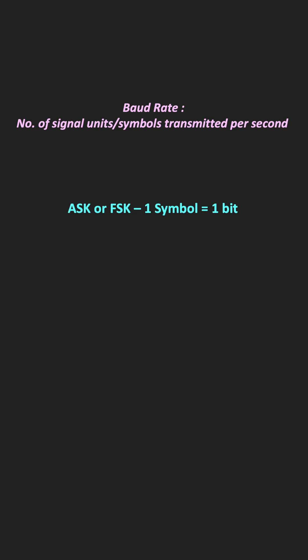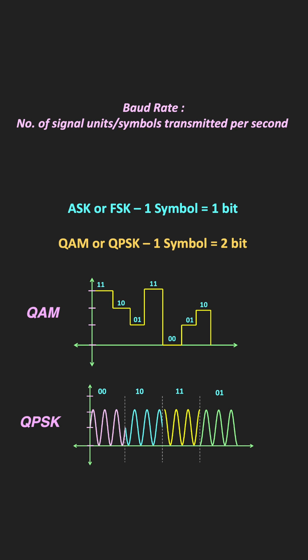On the other hand, in quadrature amplitude modulation and quadrature phase shift keying, the signal can have a total of four different states. For example, in quadrature amplitude modulation, the signal can have four different voltage levels, or in QPSK, the signal can have four different phase shifts. That means in these two modulation schemes, each state can be represented by two bits, and therefore each symbol carries two bits of information.